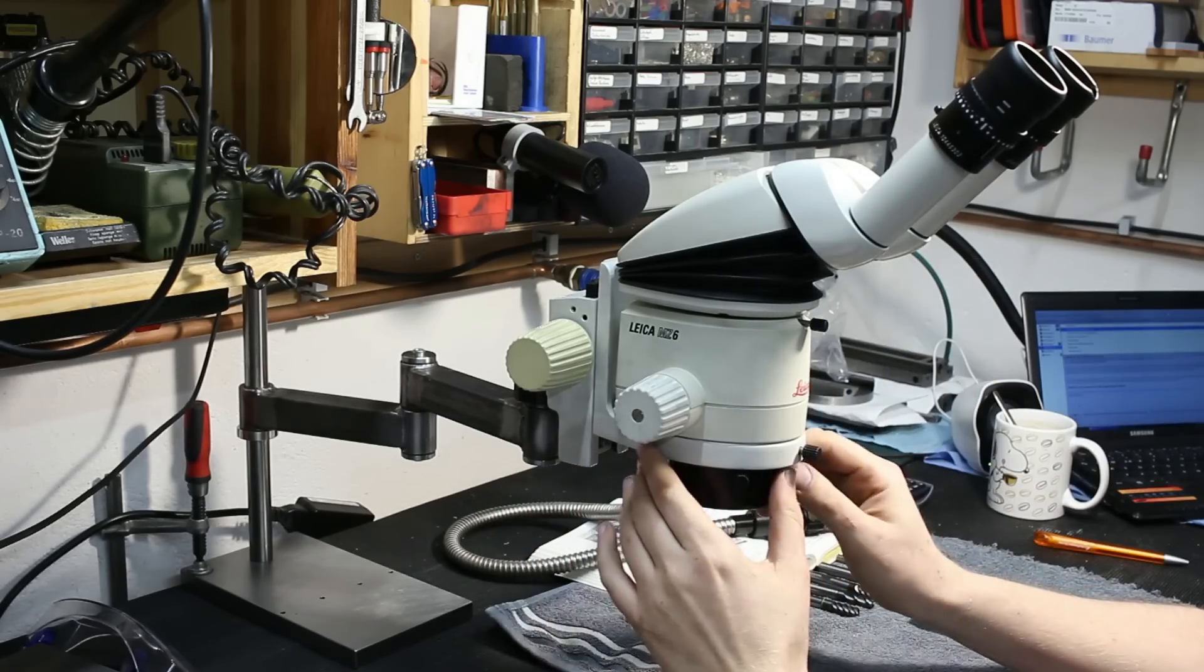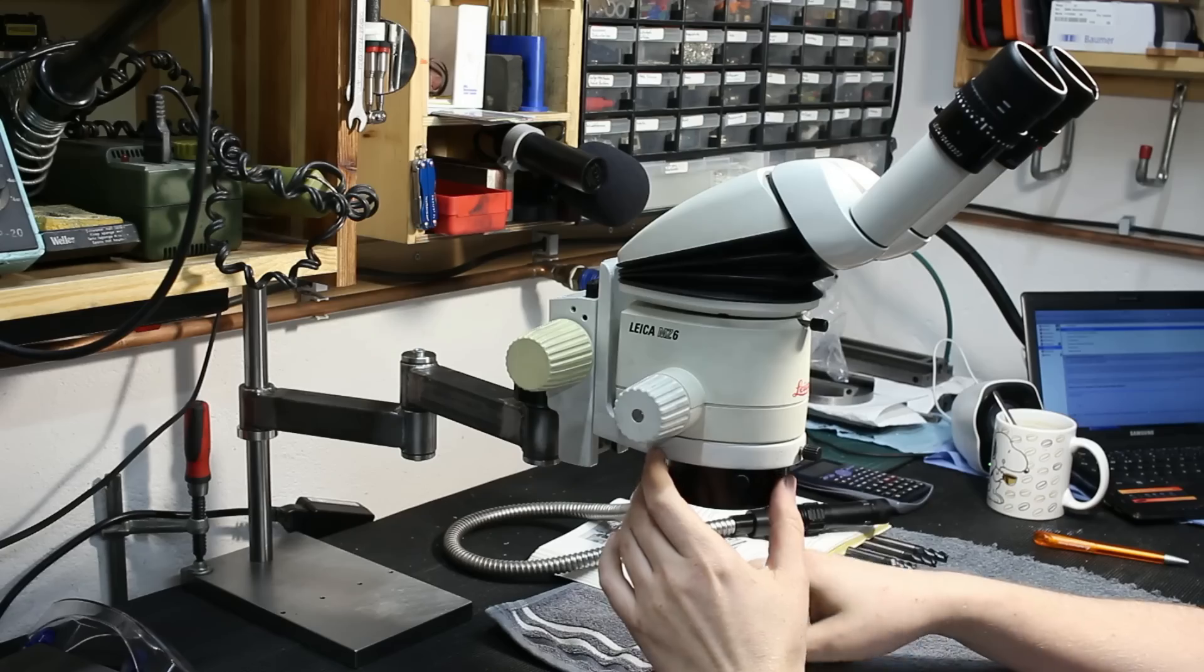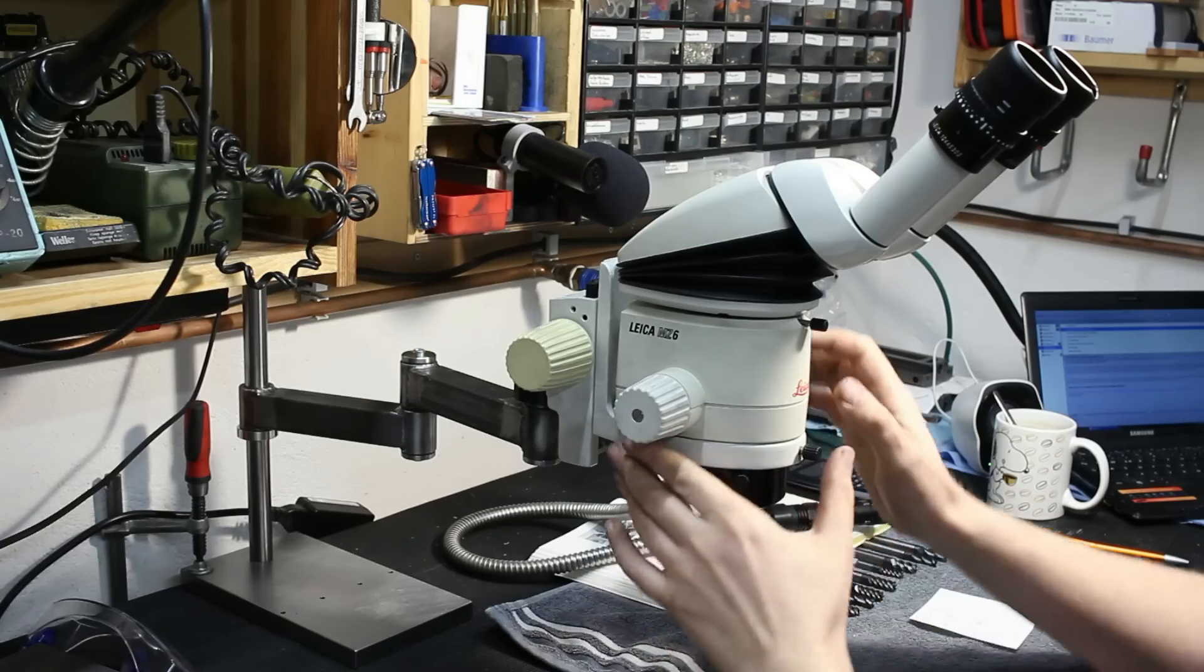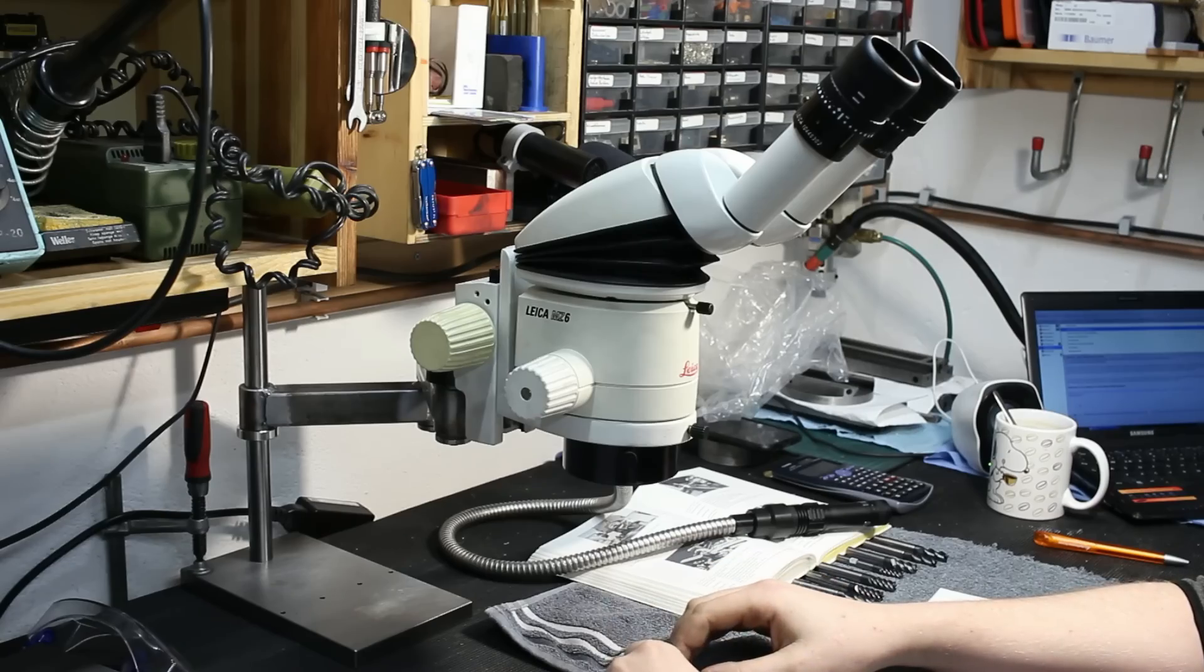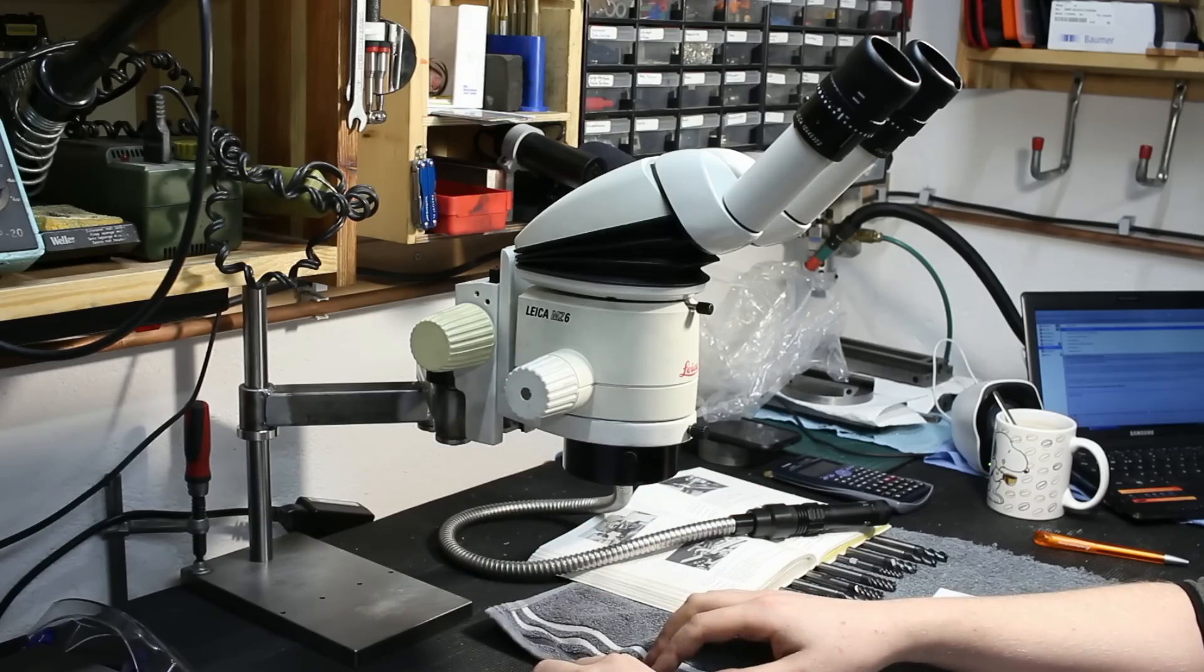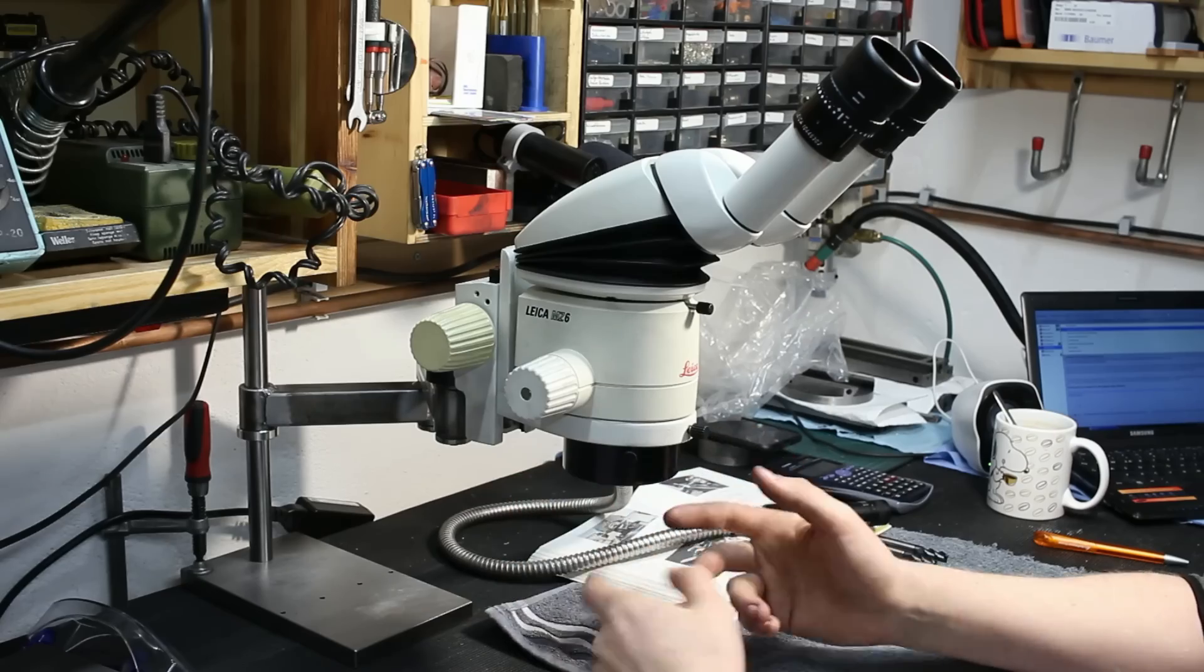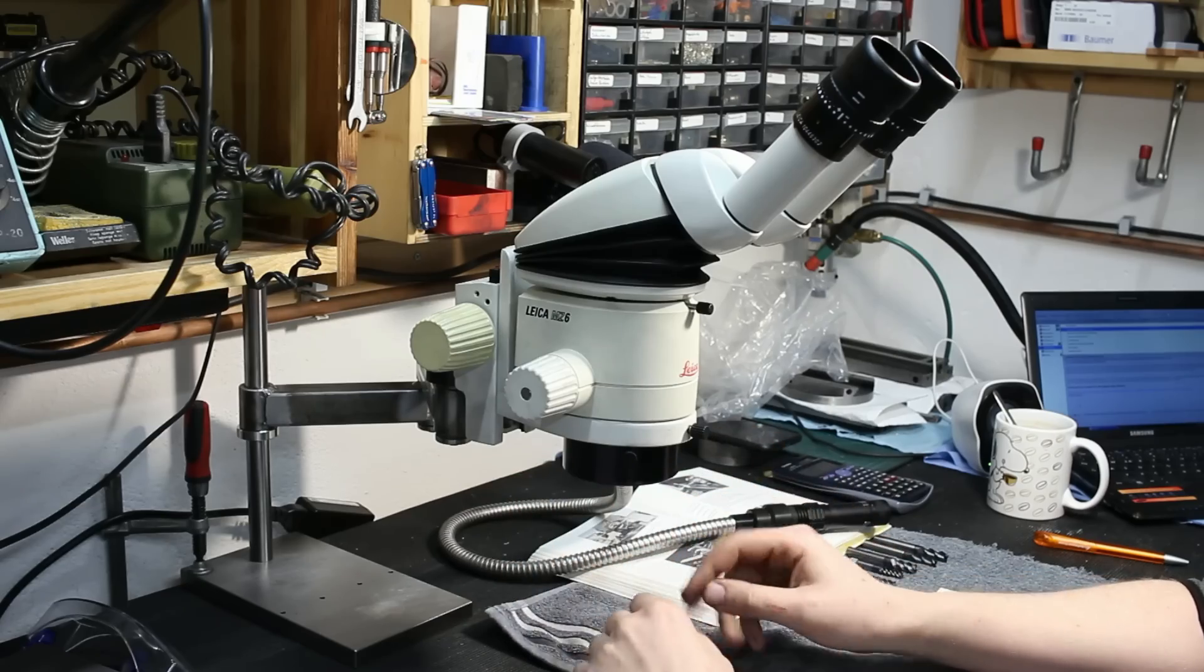I'm quite used to using stereo microscopes at work. We have them everywhere. We have Eschenbach microscopes which are a bit cheaper. Very decent microscopes for general shop use. They don't have zoom. They have fixed magnification.